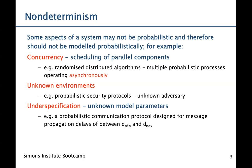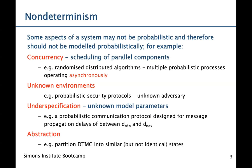Finally, another example is if we abstract a DTMC by partitioning the states into similar but not identical states. Then we don't know precisely what state we're in, so we don't know precisely what the probabilistic behavior will be. We can therefore have a non-deterministic choice as to what the actual probabilistic behavior will be.